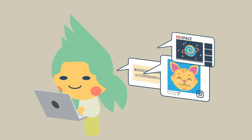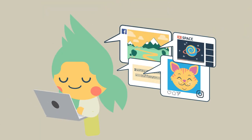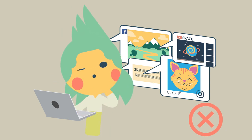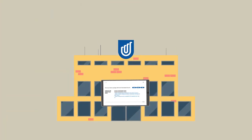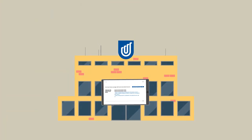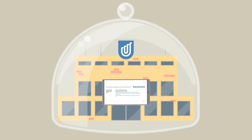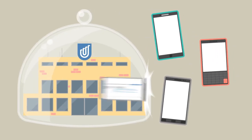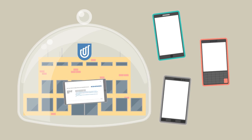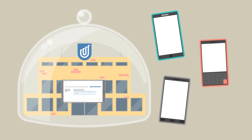Using someone else's work without their permission is the same as stealing, and it is your responsibility to check any licensing conditions before you go ahead. For example, the university has agreements with publishers which allow students to use content from electronic books and journals for research and study. These agreements do not allow you to share these licensed materials openly outside of the university.